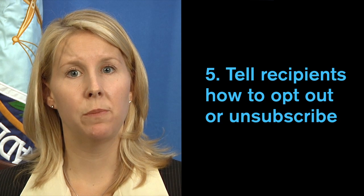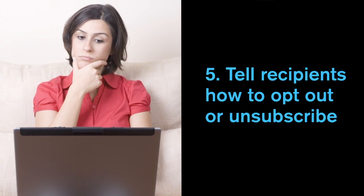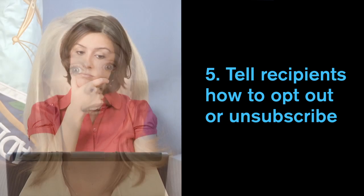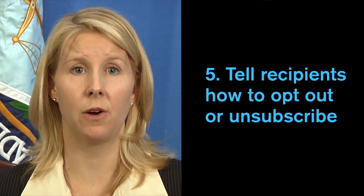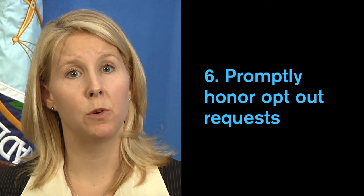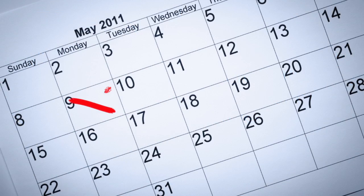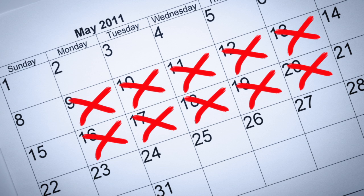The email has to tell people how to opt out of getting more emails from you. Make this information easy to find and understand, and give recipients an email address or a website they can use to opt out or unsubscribe. When someone asks to be removed from your email list, you must delete their name and address within 10 business days. Once they unsubscribe, you can't share their email address with other marketers.